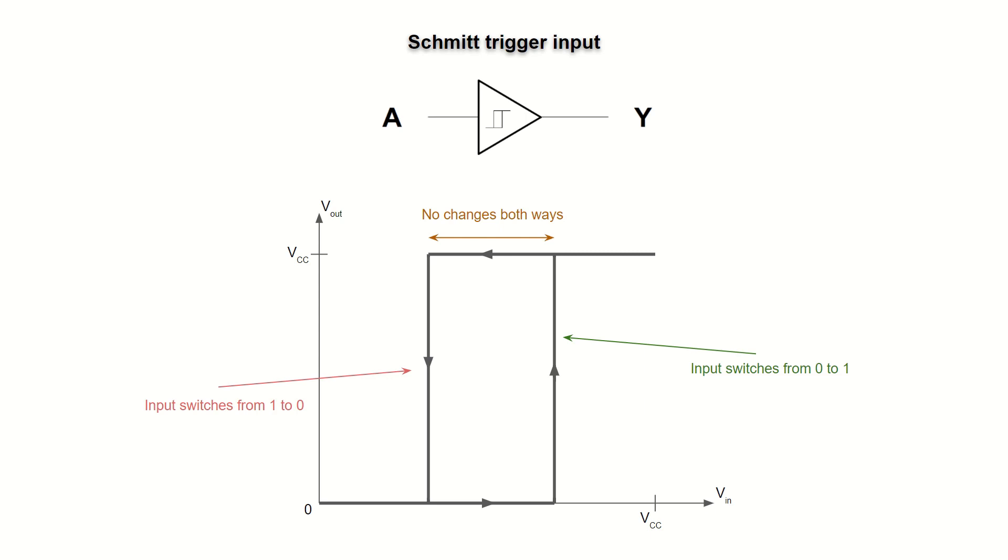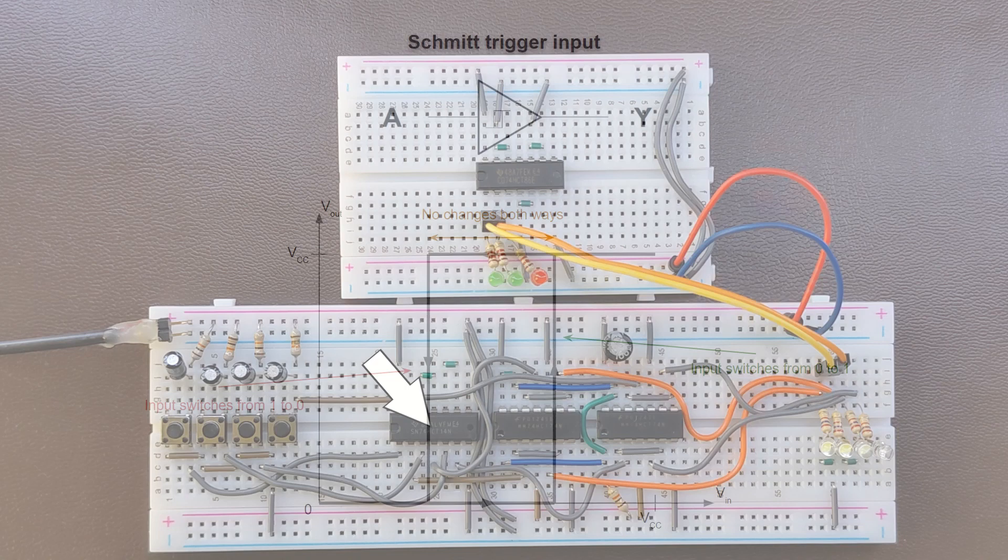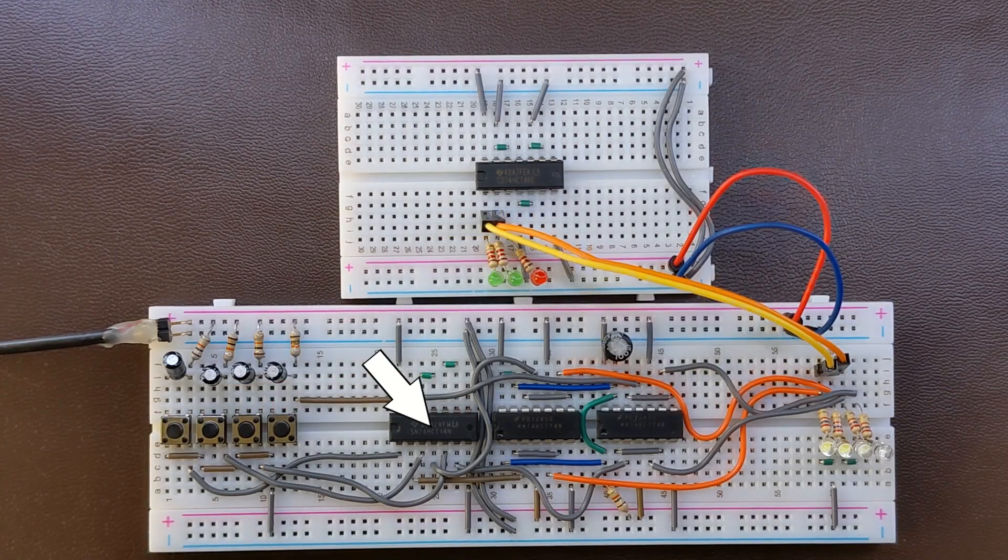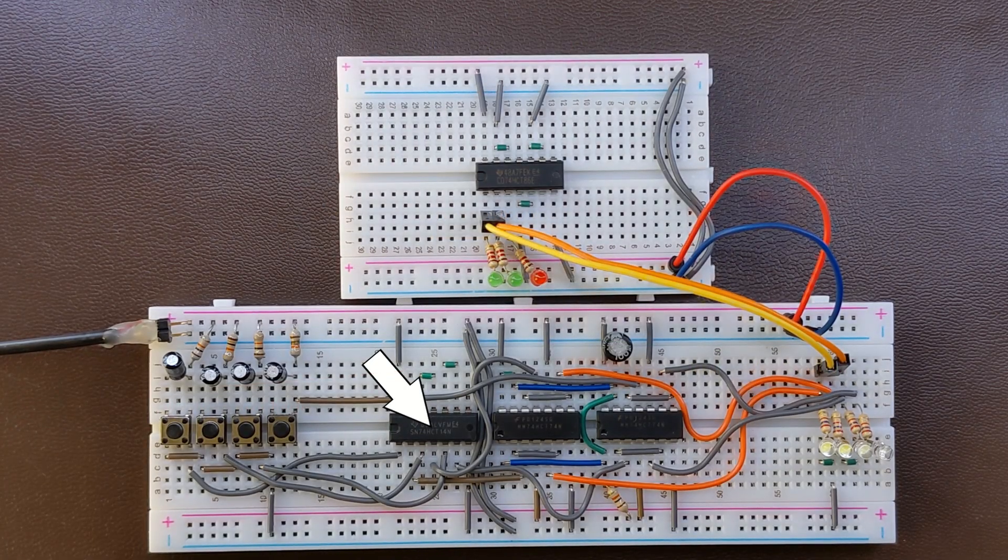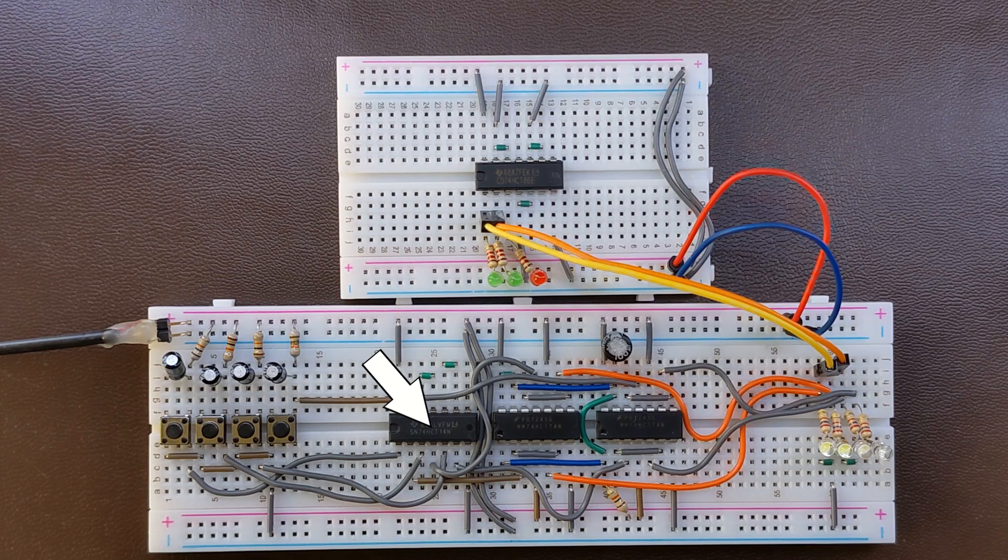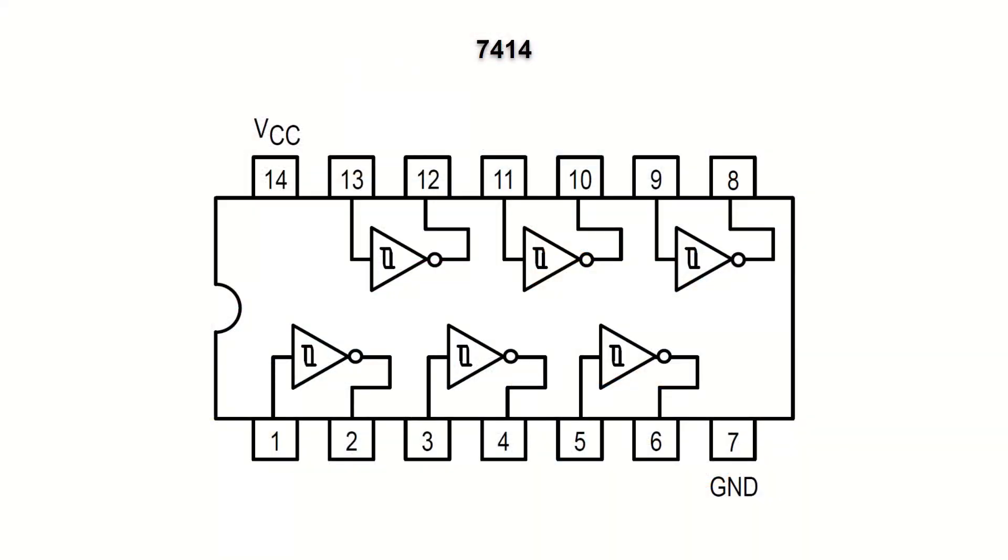As you can see, those gates with the Schmitt trigger input have this hysteresis symbol inside. We used them in the clock generator for our Intel 8088 computer, or here on this separate breadboard, which I used to generate input signals for the chips we test. In both cases I used Schmitt trigger inverters 74LS14. Let's test this chip now. 7414 has the same pinout as the regular inverters, the 7404.